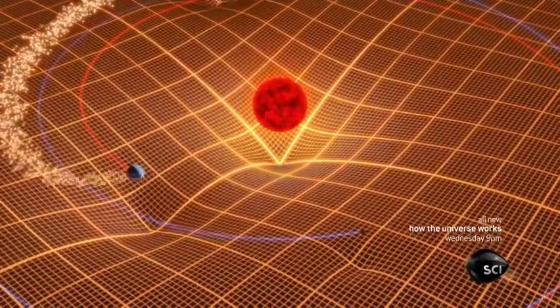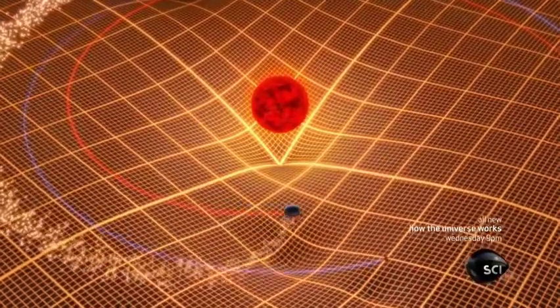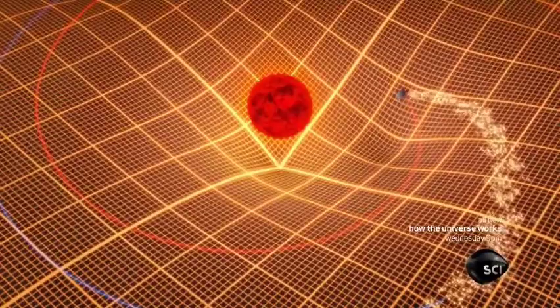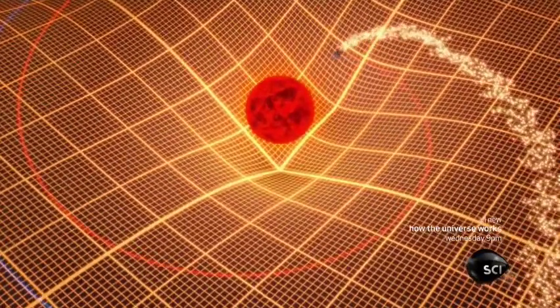It migrates in toward its star. As it closes in, the star blow-torches gas from the planet.